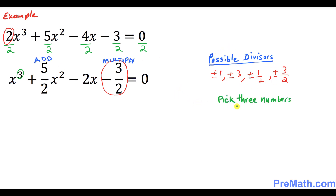That means we are looking for 3 numbers among these possible divisors. We're going to pick 3 numbers that, if you add them, should add up to 5 over 2, and if you multiply them, should give negative 3 over 2. The easy way is to look at 5 over 2, which is the same as 2 and a half — so I can write 2 plus 1 over 2.